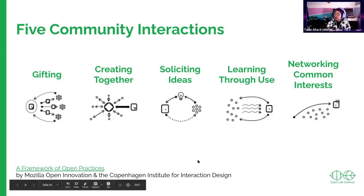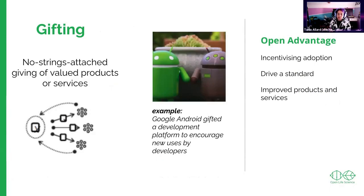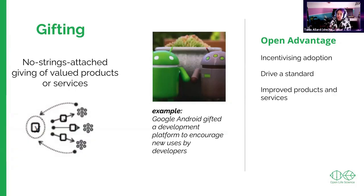The first example is the idea of gifting — giving a present with no strings attached, so you can see the value and start using it, building on it, or reusing it for your own purpose. There are many advantages to having these open models or this gift approach: you're incentivizing adoption, reducing the barriers of adoption for folks, and because you have an open culture and open development, you can strive to have improved products and services.